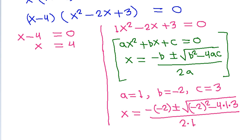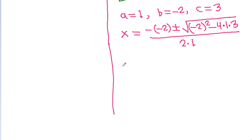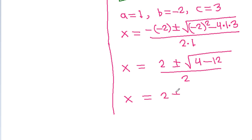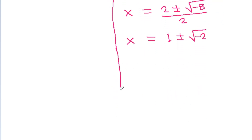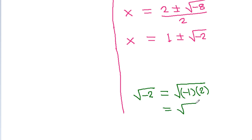So x equals (2 ± √(4 - 12)) / 2. And x equals 2 plus or minus square root of minus 8, divided by 2. Dividing by 2, x will be equal to 1 plus or minus square root of minus 2. And square root of minus 2 equals square root of minus 1 times 2, which is square root of minus 1 times square root of 2.